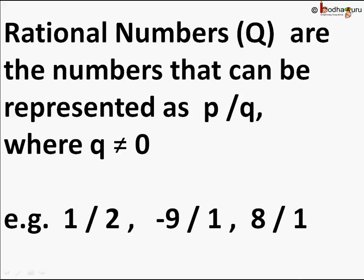Q should not be 0. Minus 9 is also a rational number — it can be written as minus 9/1, where p is minus 9 and q is 1. Similarly, 8 is a rational number because 8 can be written as 8/1, where p is 8 and q is 1. So all integers are rational numbers, and numbers between two consecutive integers can be represented as p/q where q is not equal to 0. For example, 1/4, 1/2, and 3/4 are rational numbers between 0 and 1.